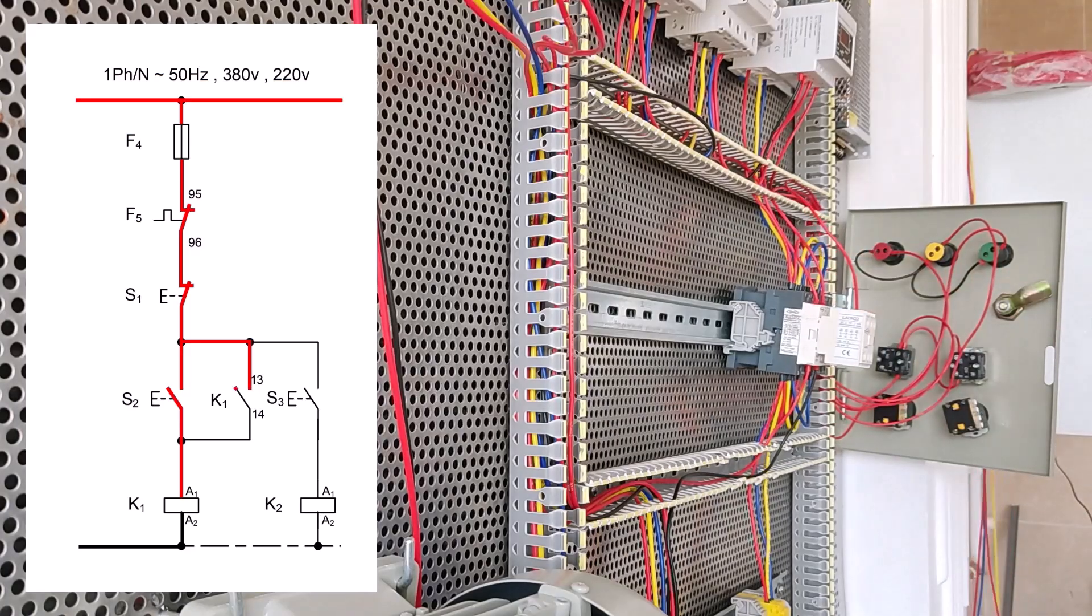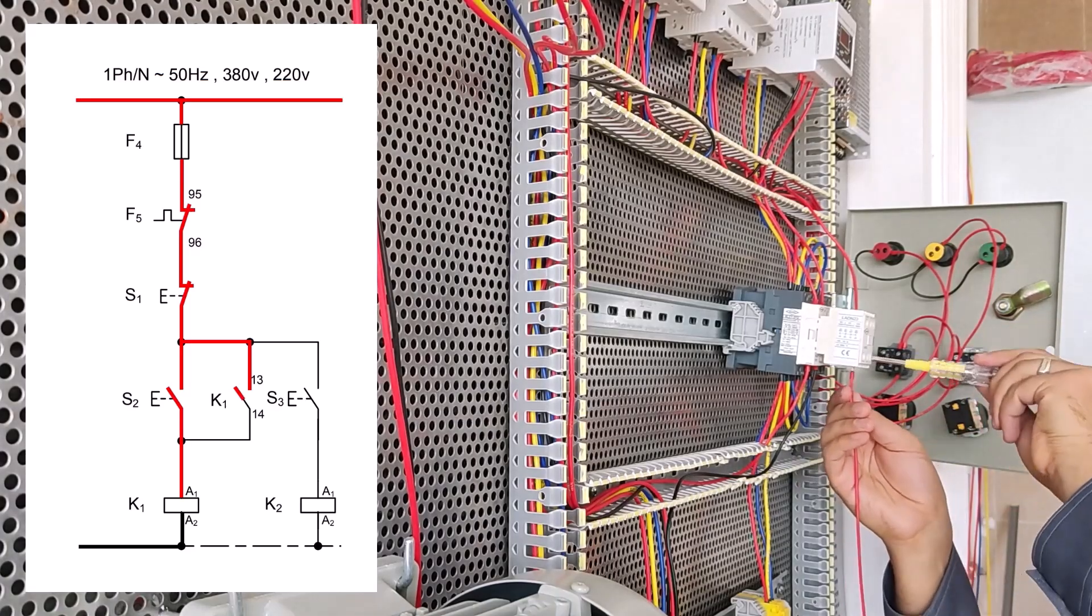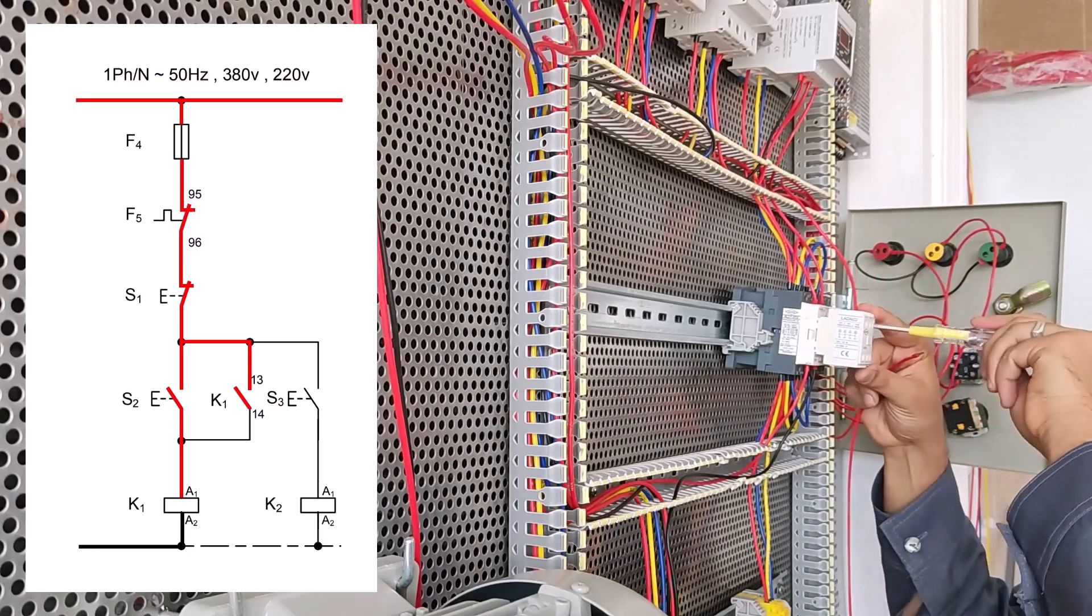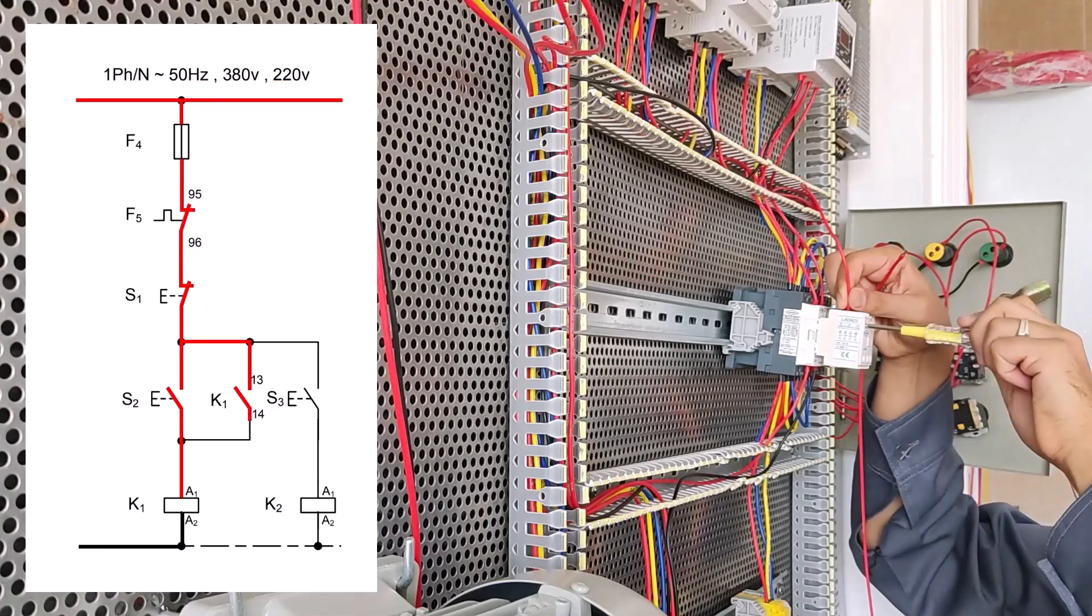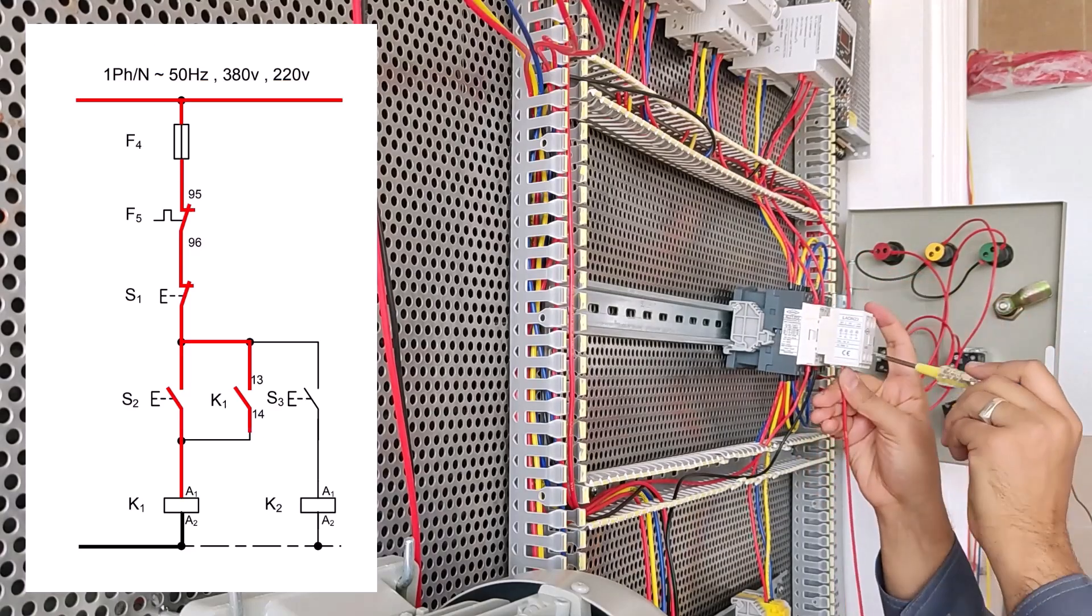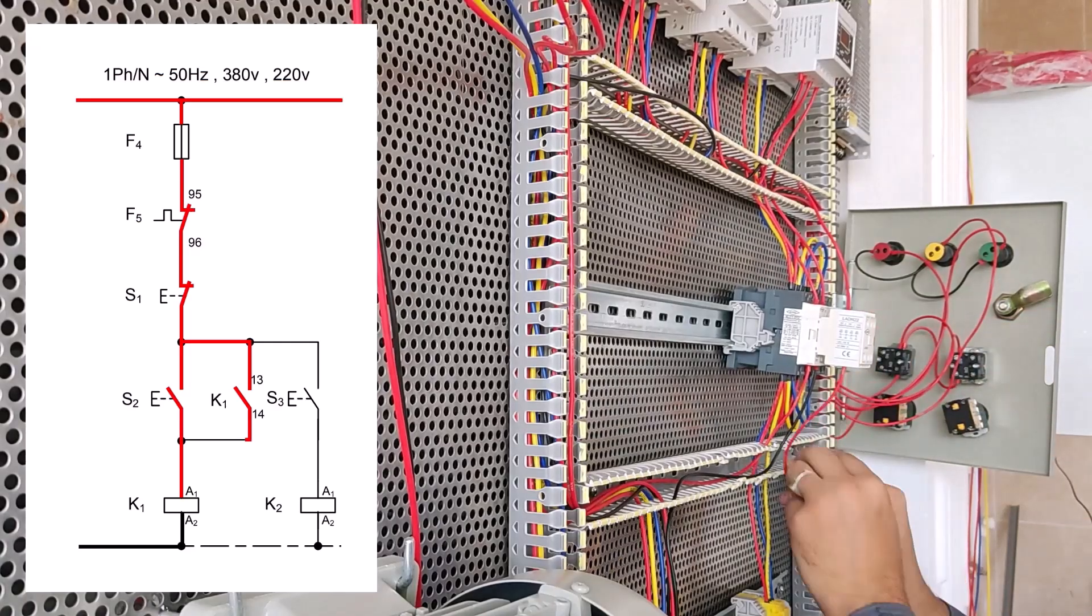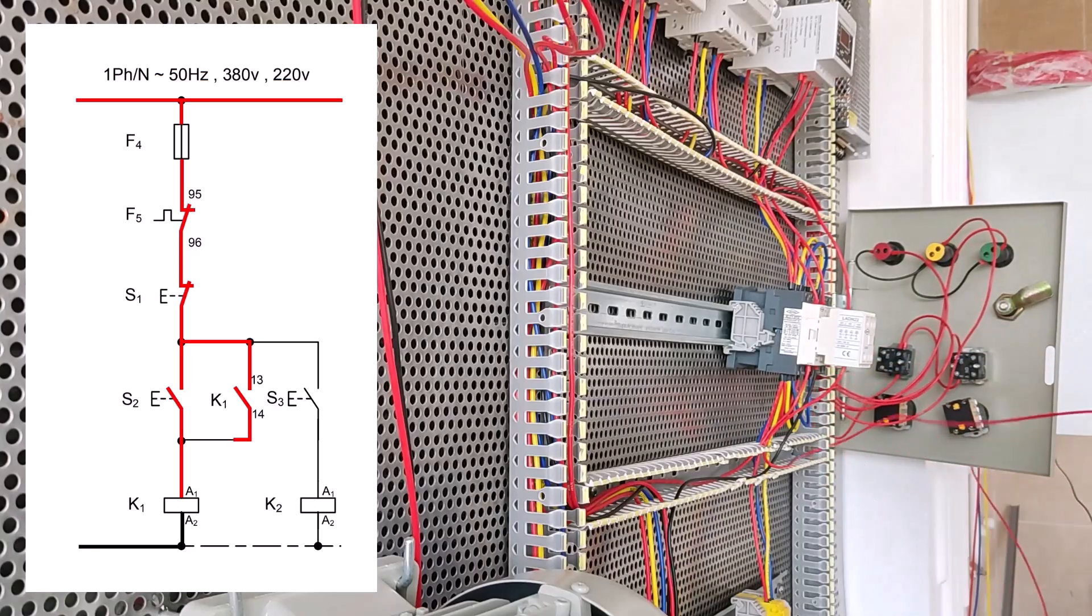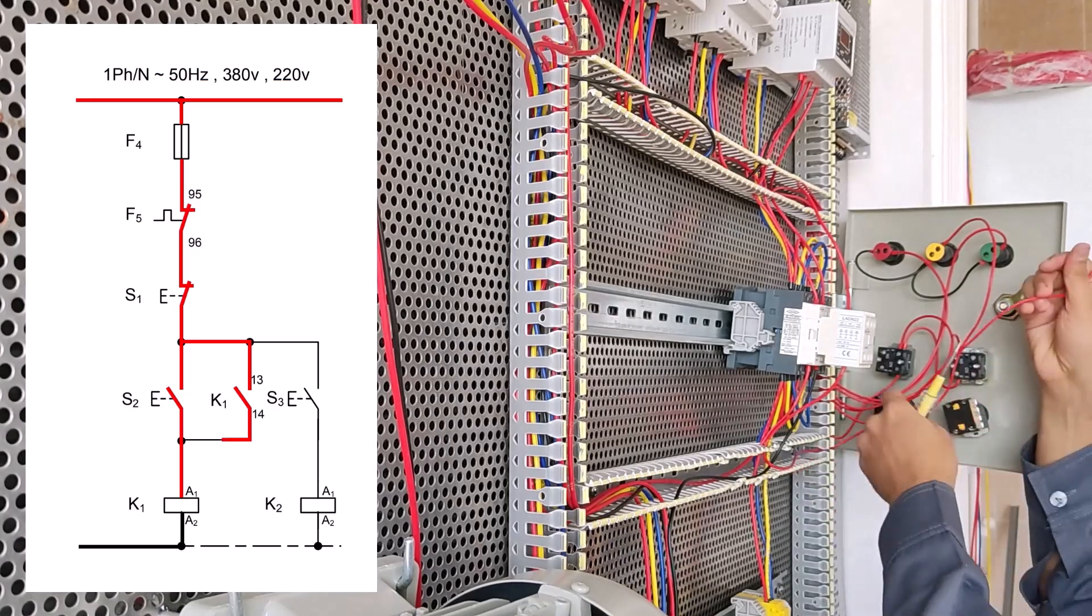Now we have to connect 14 start S2 to 14 conductors K1, and connect 14 conductors K2 in parallel to load control. As you can see on the map the red lines are complete.